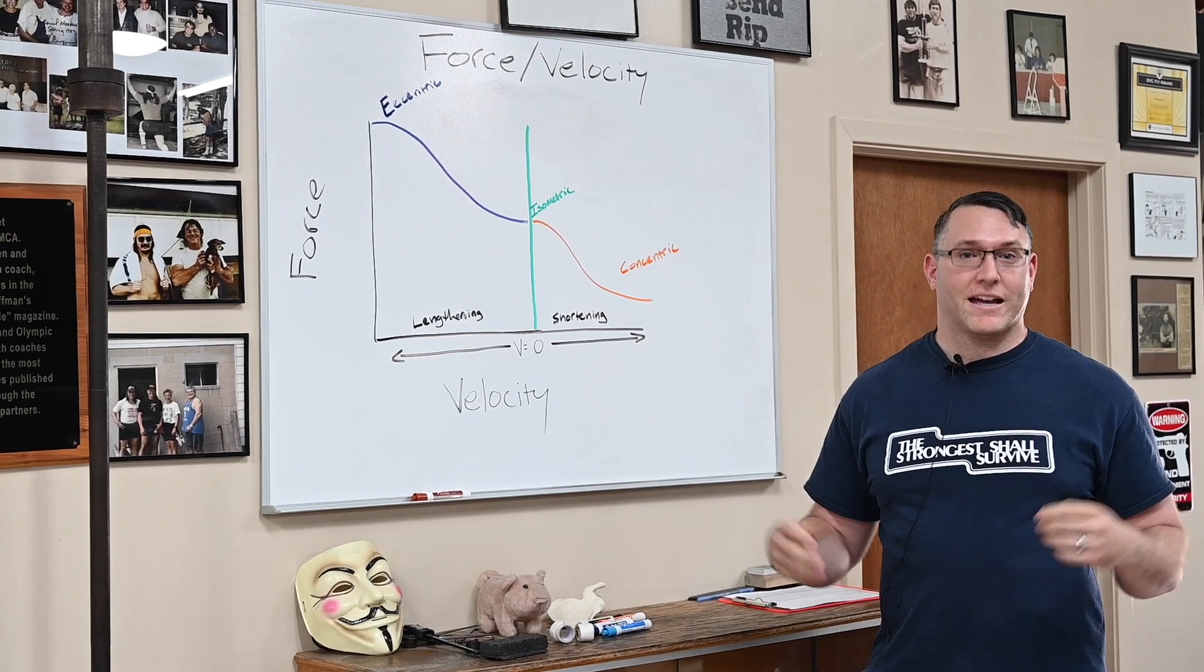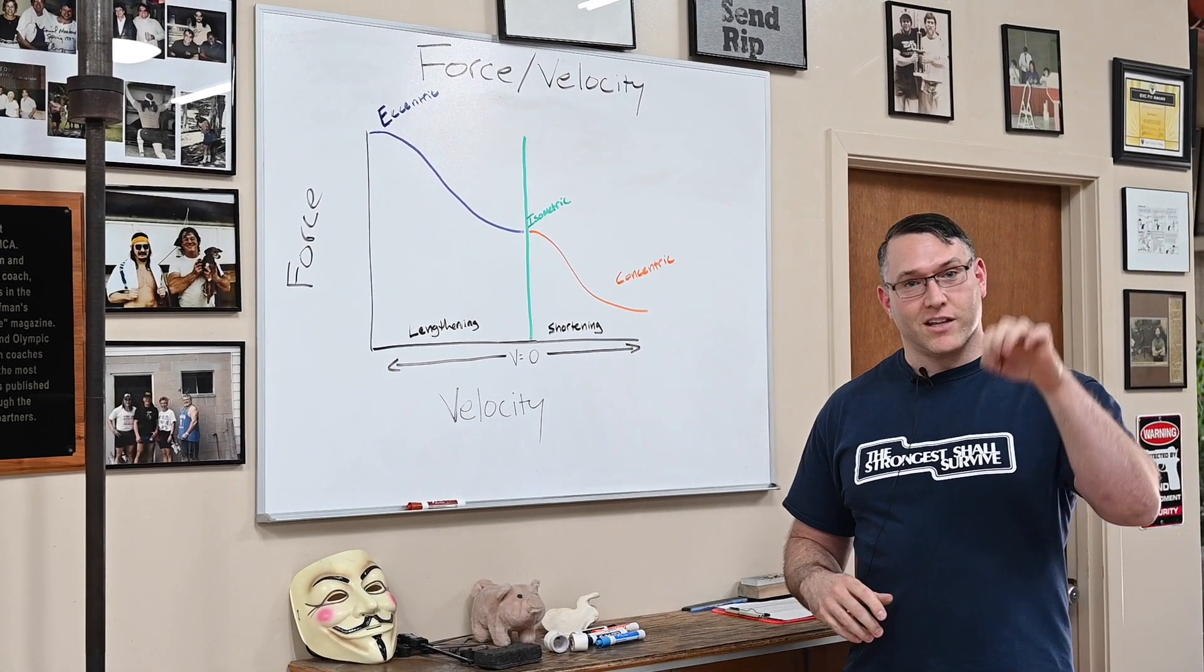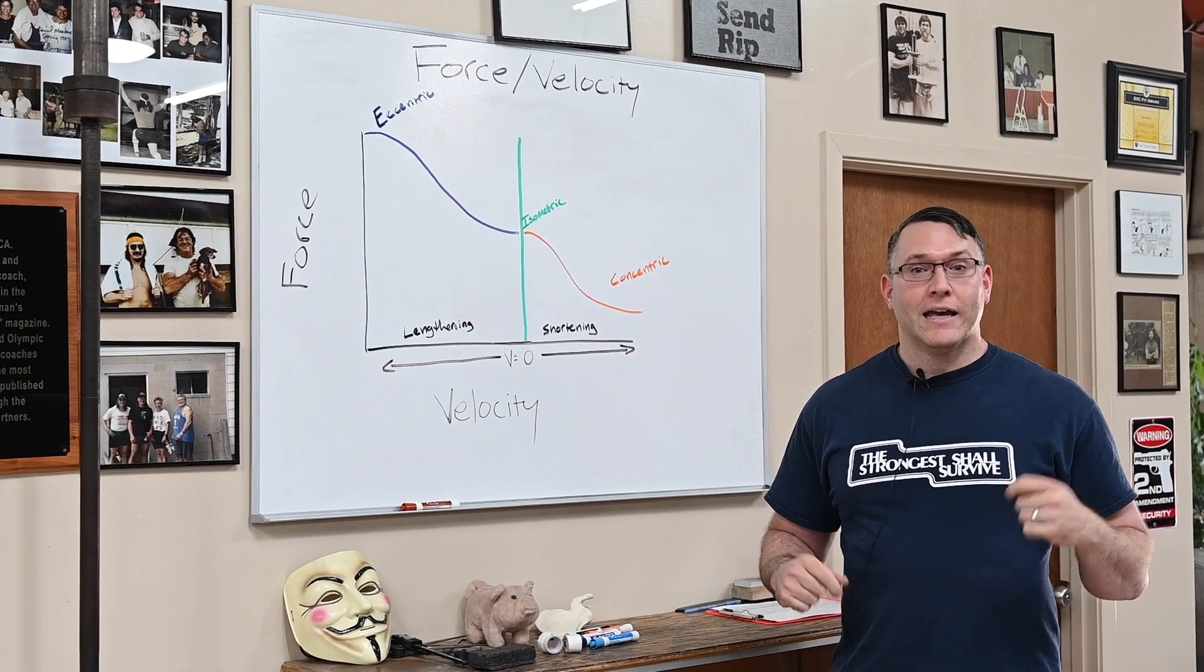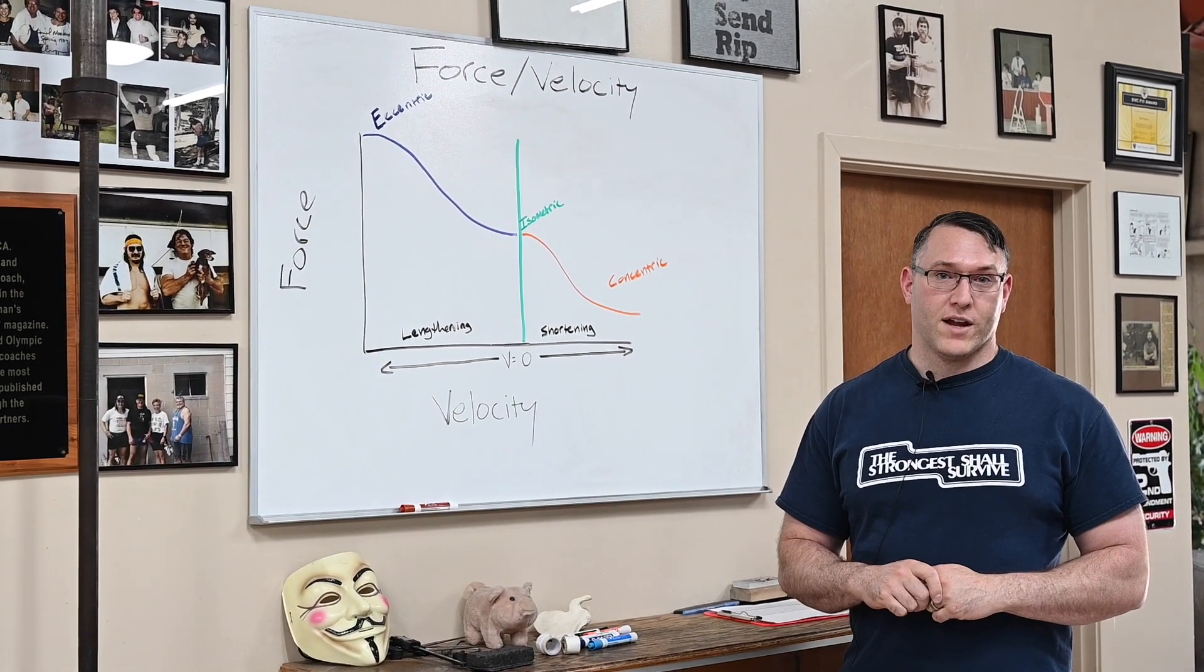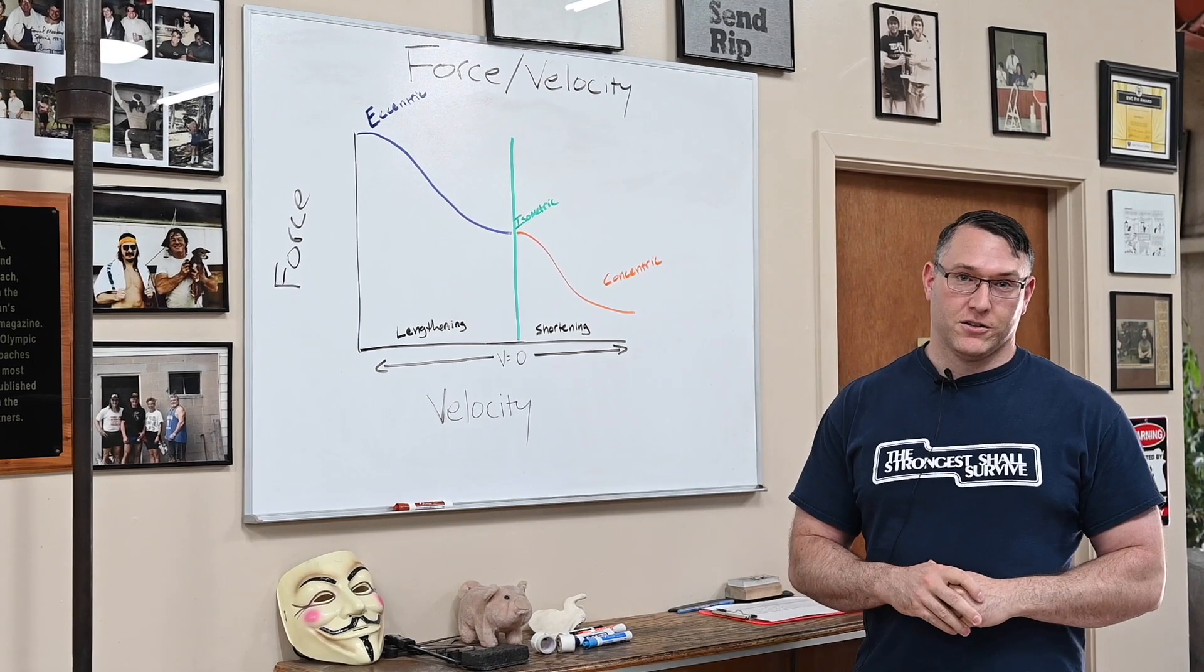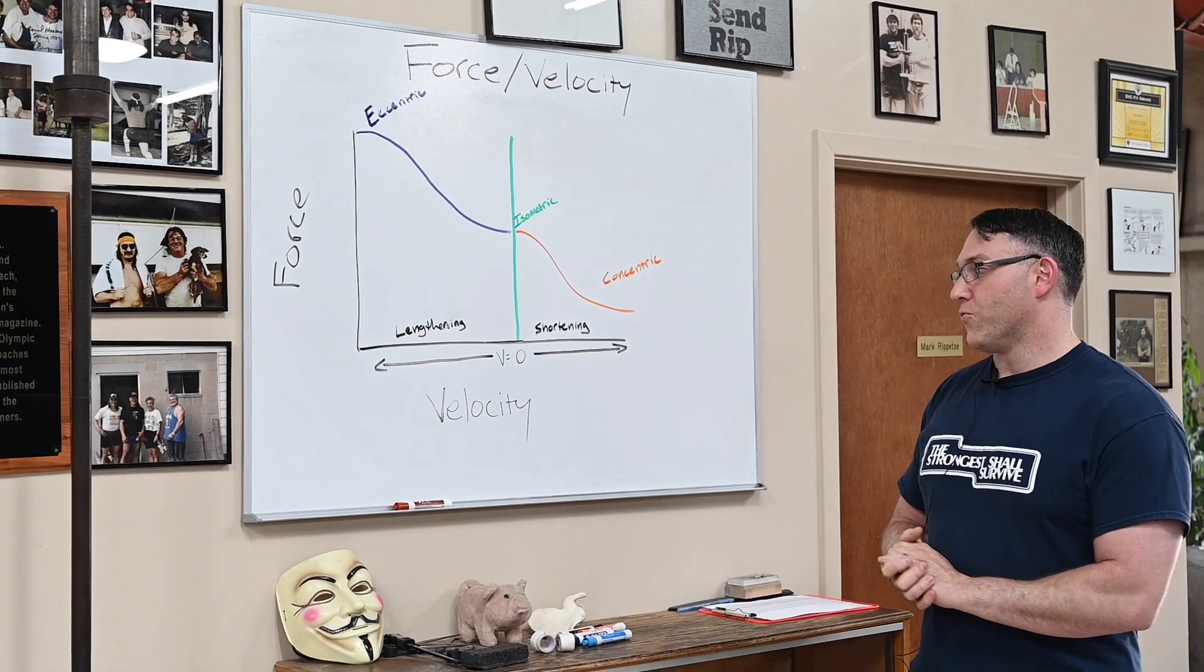Whatever the weight is, let's say it's 200 pounds, that's the magnitude. The point of application is where the bar is going to be resting on your back, and the direction is going to be straight down towards the floor because gravity is pulling down on the bar. So that's what a force is.